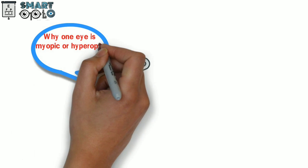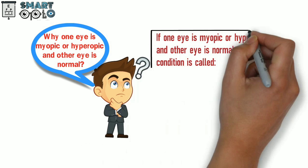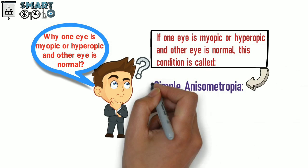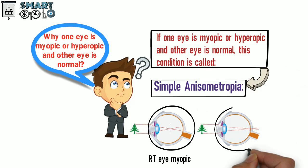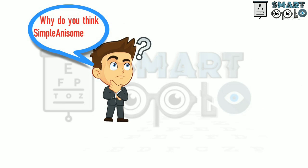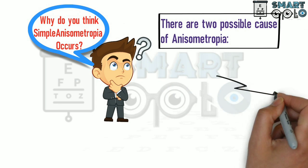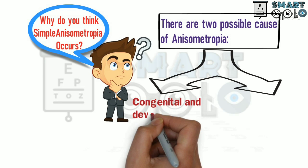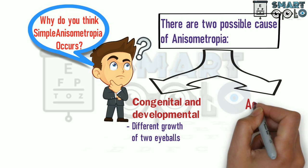Now let's come back to our main topic: why one eye is myopic or hyperopic and the other eye is normal. If one eye is myopic or hyperopic and the other eye is normal, this condition is called simple anisometropia. There are two possible causes. The first is congenital and developmental — this occurs due to different growth of the two eyeballs.